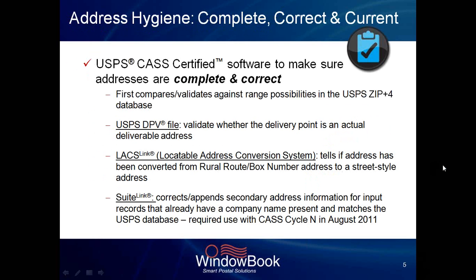When you talk address hygiene, there are three things you want to make sure you achieve — the three Cs of address hygiene. You want a complete, correct, and current address. You want to use USPS CAS certified software to make sure addresses are complete and correct. That CAS certified software takes your input address and validates it against a range of possibilities in the Postal Service ZIP Plus 4 database.